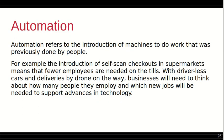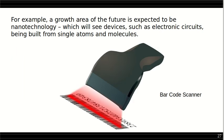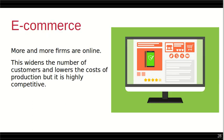Automation refers to the introduction of machines to do work that was previously done by people. For example, the introduction of self-scanned checkouts in supermarkets means that fewer employees are needed on the tills. With driverless cars and deliveries by drone on the way, businesses will need to think about how many people they employ. A growth area of the future is expected to be nanotechnology, which will see devices such as electronic circuits built from single atoms and molecules. More and more firms are also getting online through e-commerce, which widens the number of customers and lowers the cost of production, but it is highly competitive.